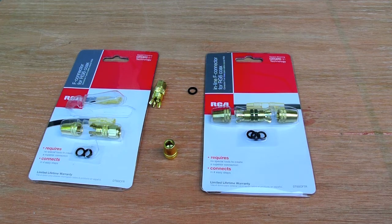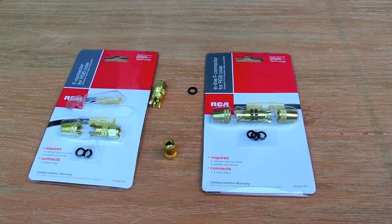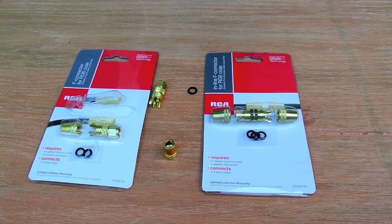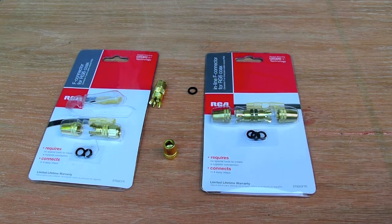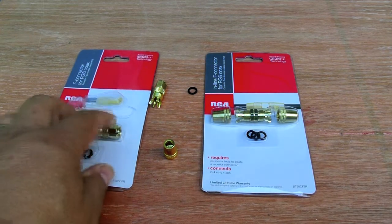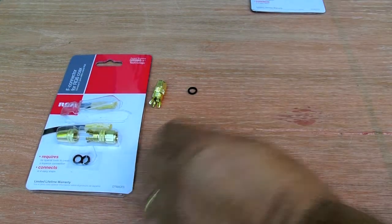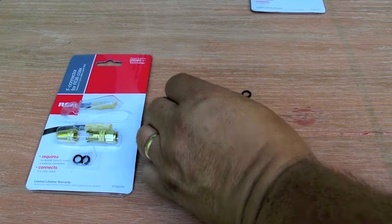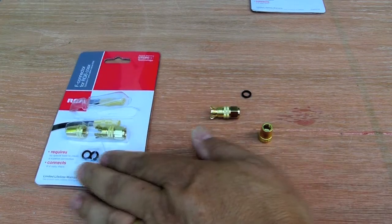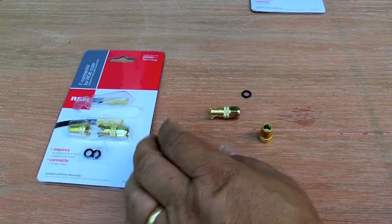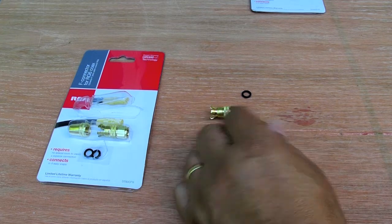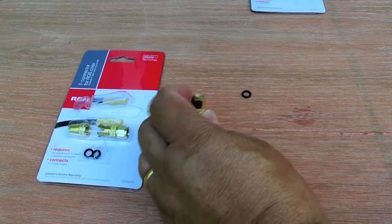I removed one of these from the package. These were both about six dollars - six dollars for this and six dollars for two of these connectors. It looks like they give you a couple extra o-rings. The connectors are three pieces: basically the body, the end cap, and an o-ring.